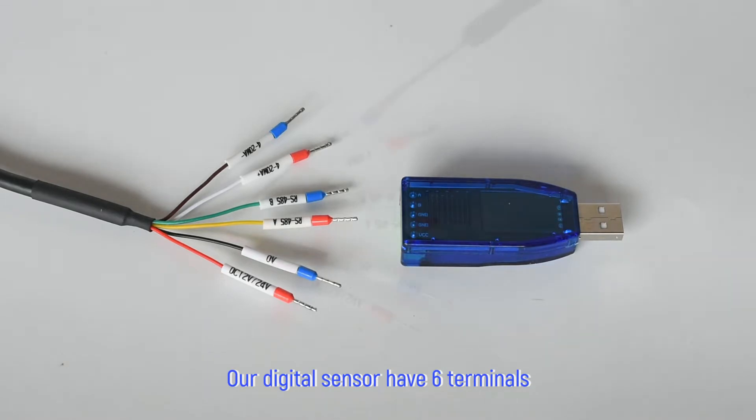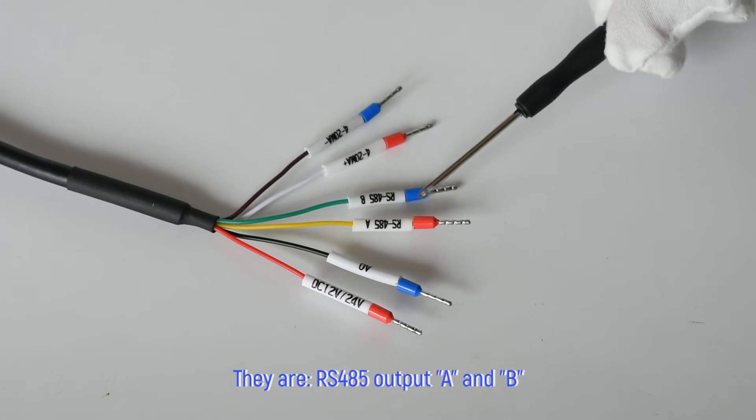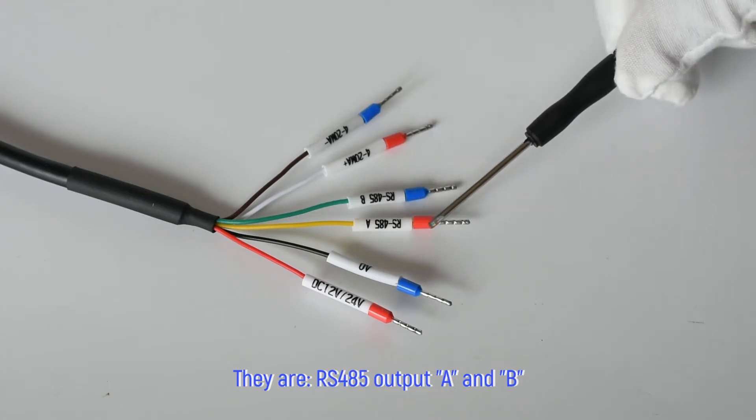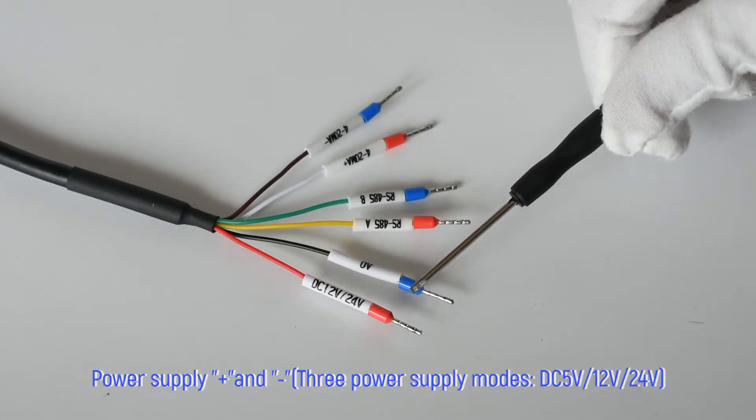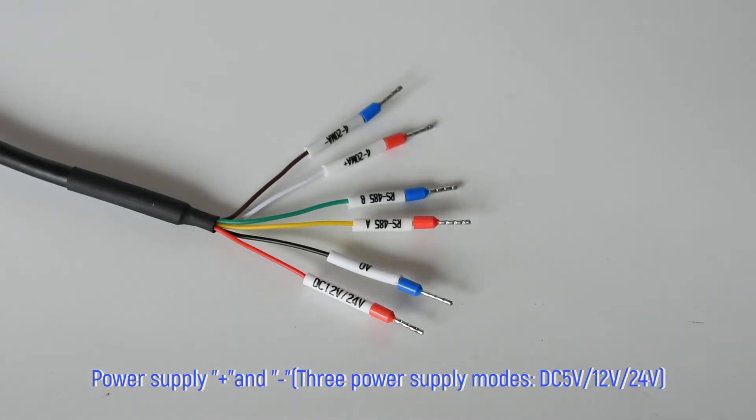Our digital sensor has 6 terminals: 4 to 20 mA output plus and minus, RS485 output A and B, power supply plus and minus. There are 3 power supply modes: DC5V, DC12V, and DC24V.